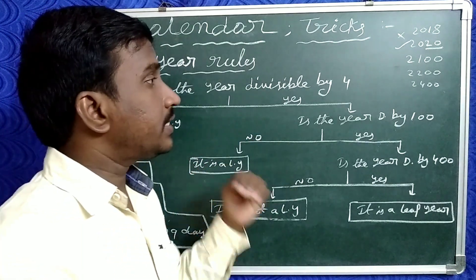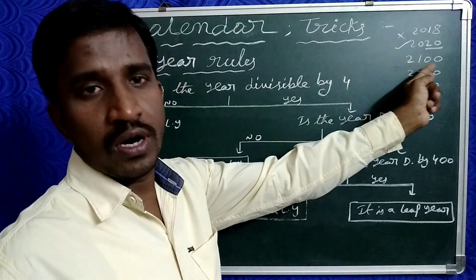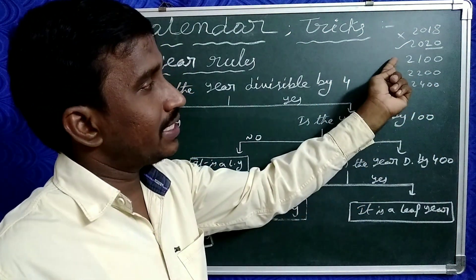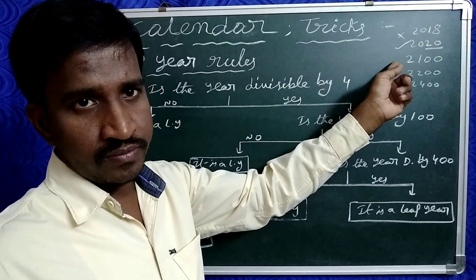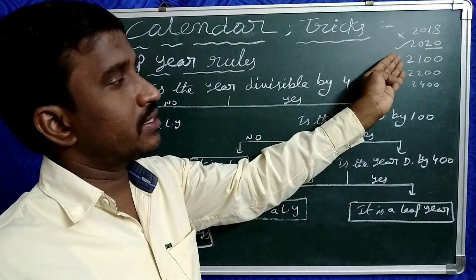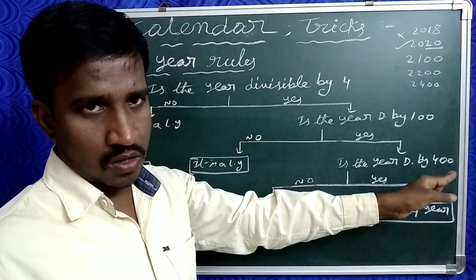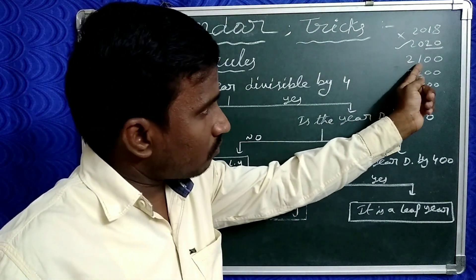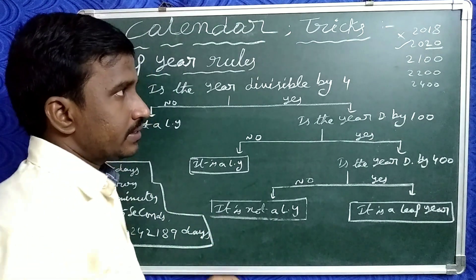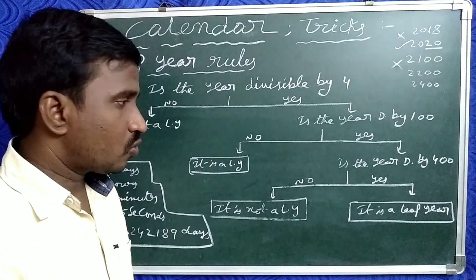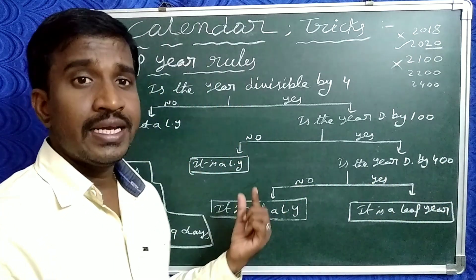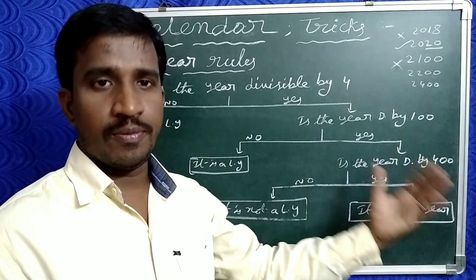Suppose it is divisible by 100 — for example, 2100 is divisible by 4 and also by 100. Even so, it is not a leap year because it is a multiple of 100. Now check: is it divisible by 400? 2100 is not exactly divisible by 400, so it is not a leap year. If it is exactly divisible by 400, then it is a leap year.